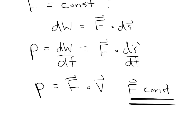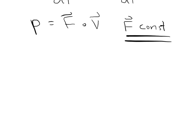We can also break this down into instantaneous power versus average power. And so we can say that the average power would just be the work done over time.